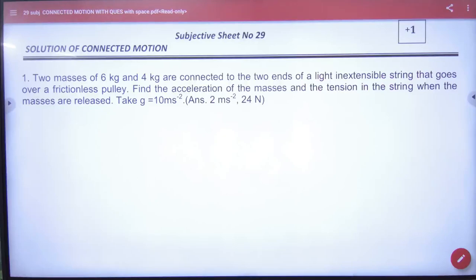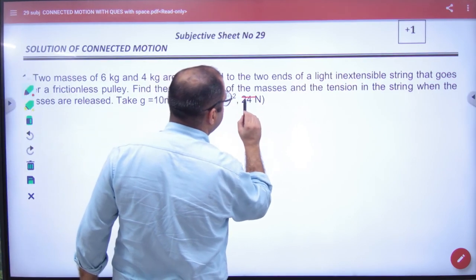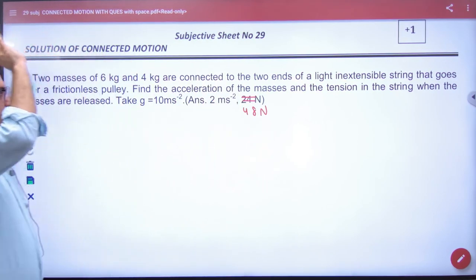Subjective sheet number 29. How many people have doubted in the first question? Sir, first answer is 48 Newton. First answer is 48 Newton. Correction please. Is the method clear?